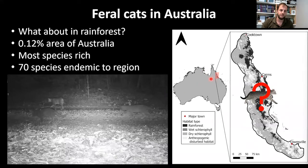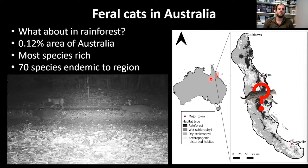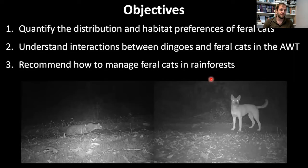This brings me to my study site — the Wet Tropics of far north Queensland. Despite comprising only 0.12% of Australia's area, it is the most species-rich region in the country. This forest has stood since the Gondwana era and is inscribed as a World Heritage site due to its outstanding biodiversity, including 70 endemic species. Given previous studies predicting feral cats shouldn't occur here, there has been a significant lack of research on their ecology in this environment.